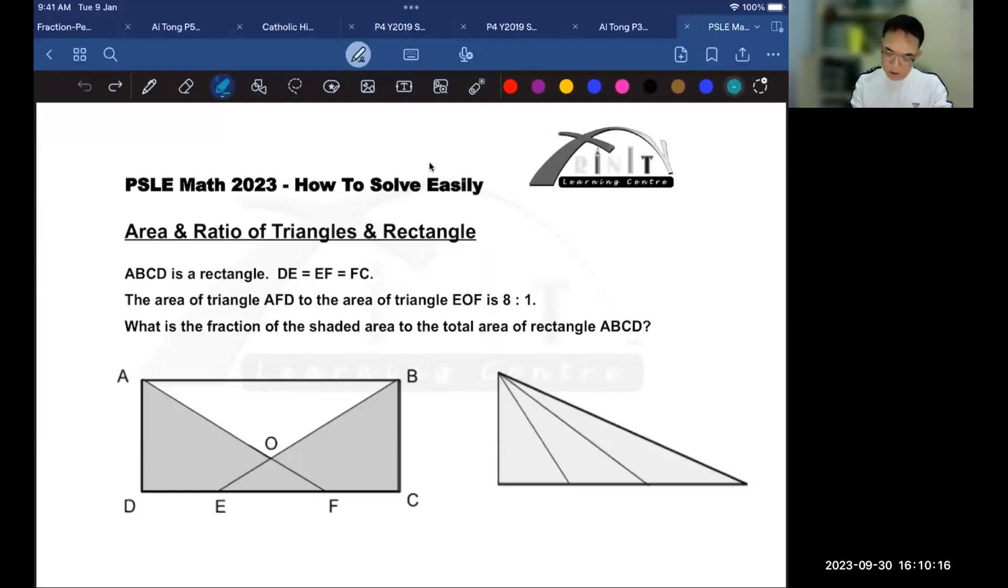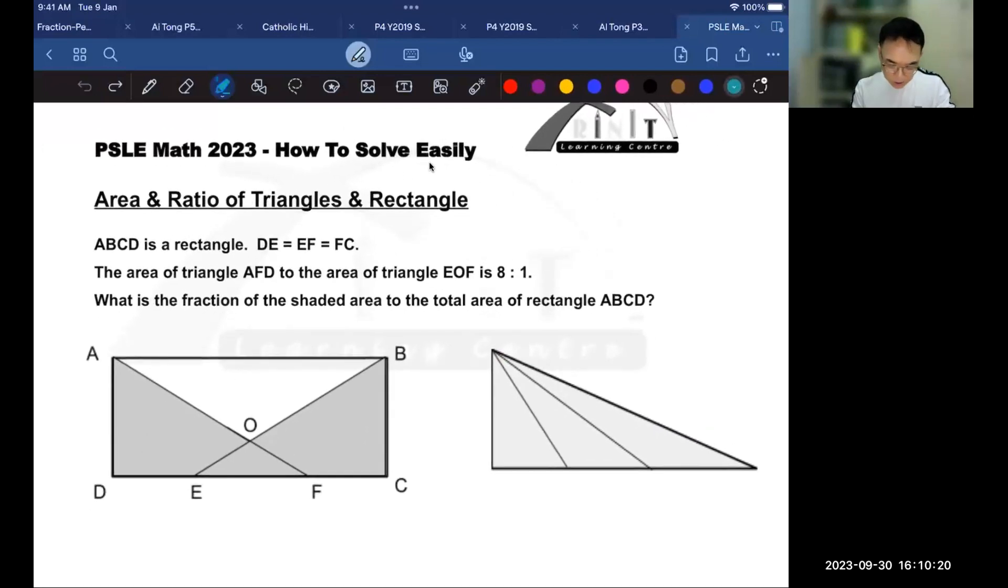So first and foremost, the keywords. It says that ABCD is a rectangle and DE is equals to EF is equals to FC. Now what that means is that this portion is equal to this portion is equal to this portion. In other words, we have three equal parts. So DE is the same as EF is the same as FC. We continue with the keywords. And it says that the area of triangle AFD to triangle EOF, so AFD to EOF is 8 is to 1. Now the question is, what is the fraction of the shaded area to the total area of the rectangle?